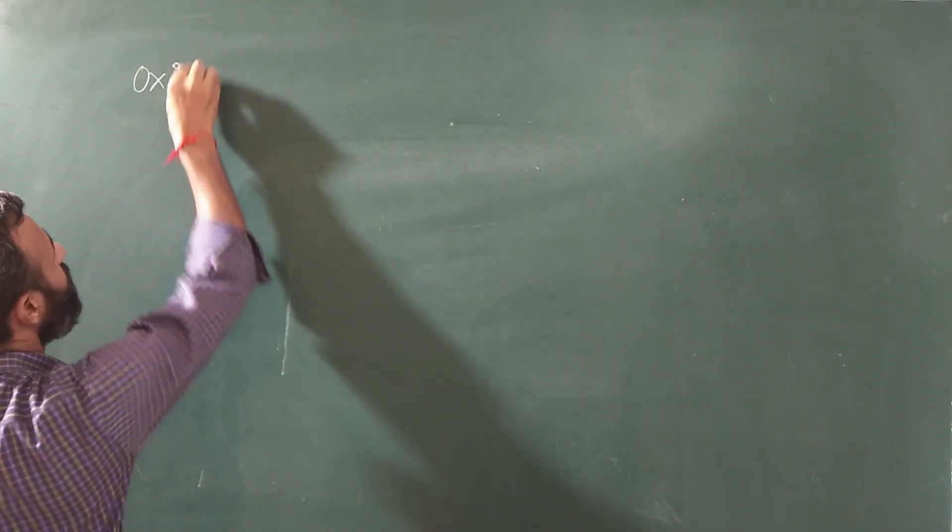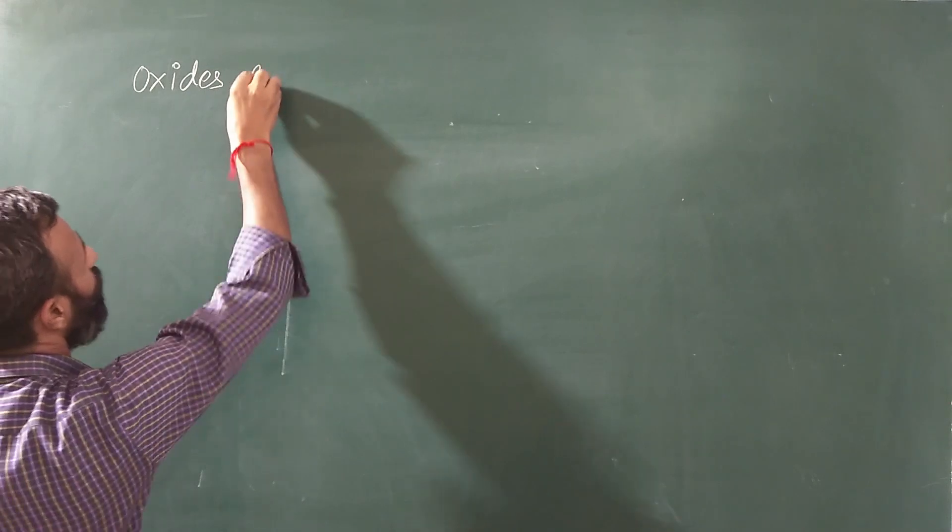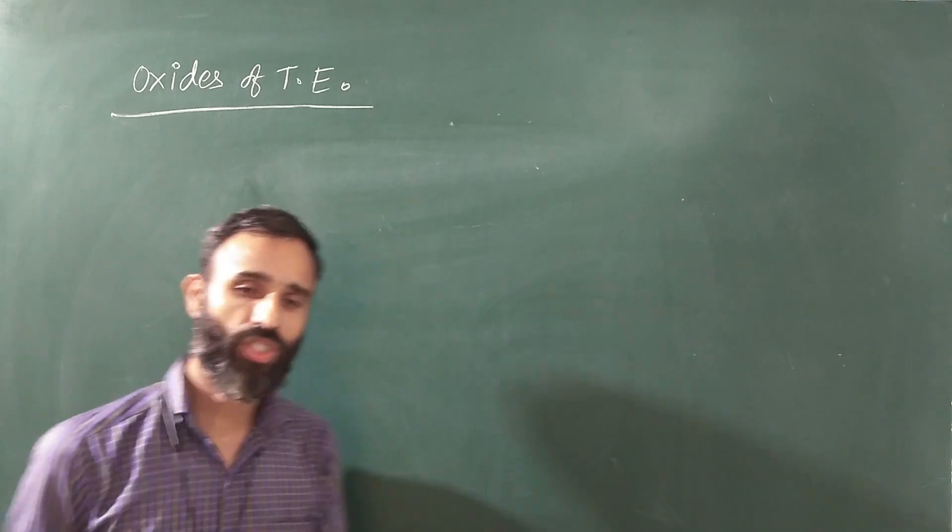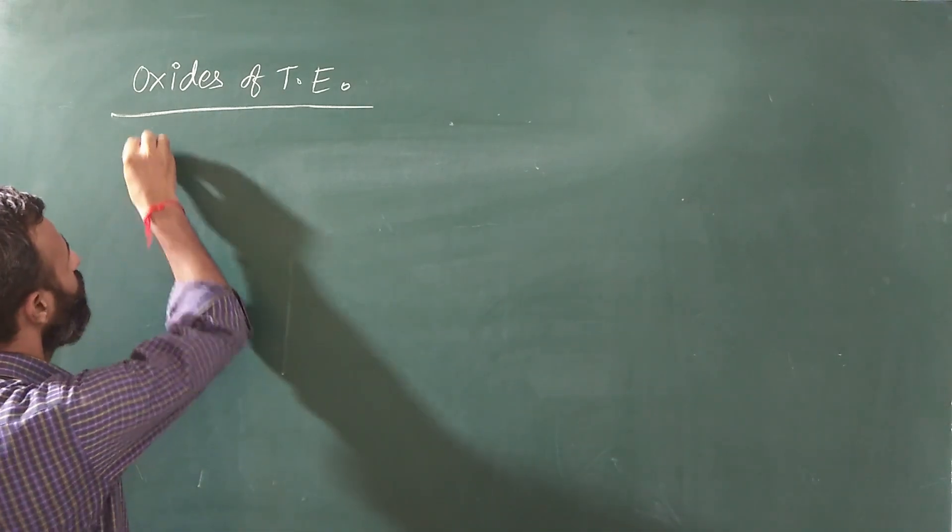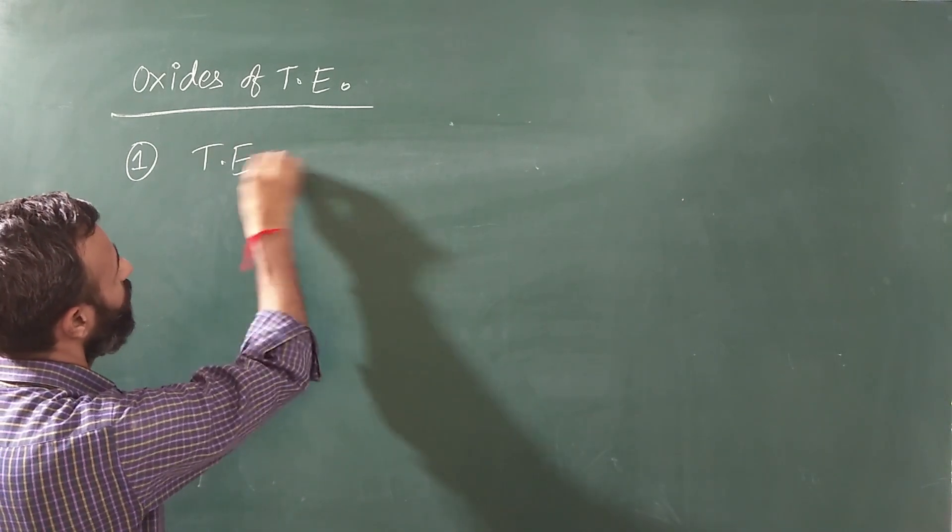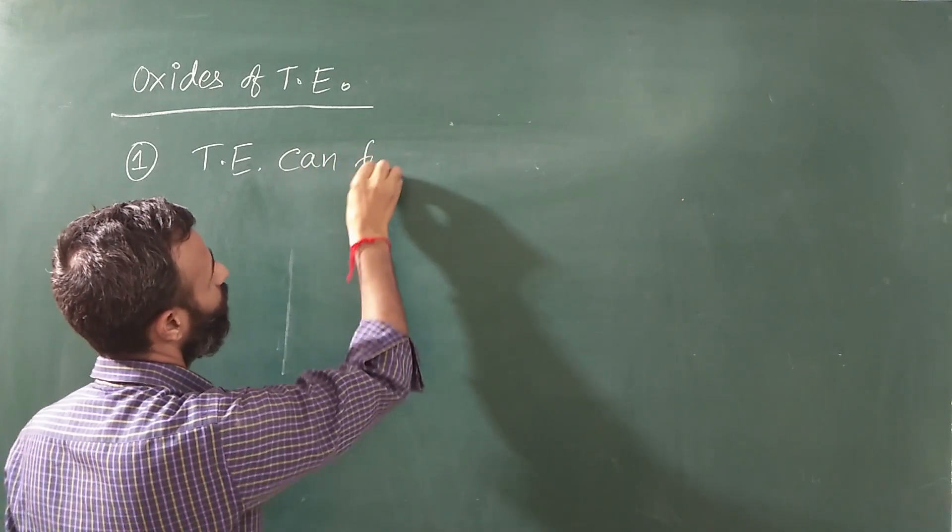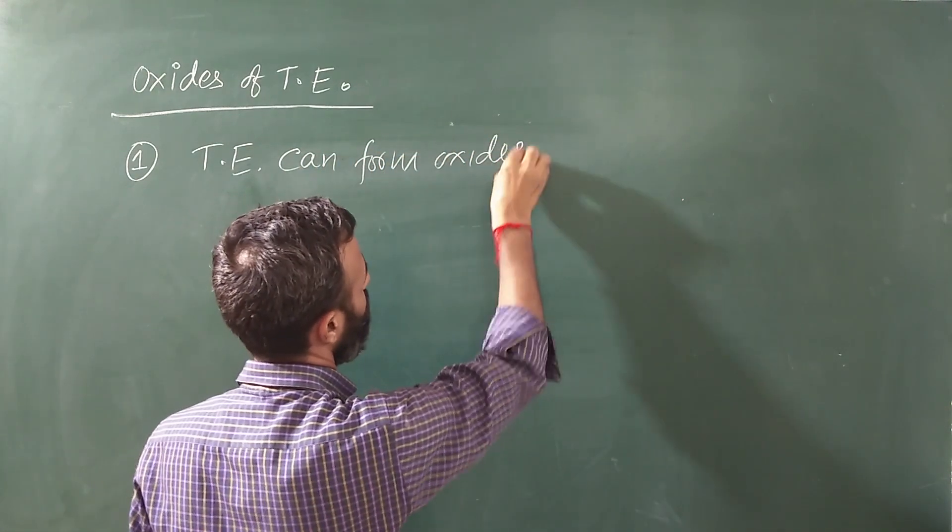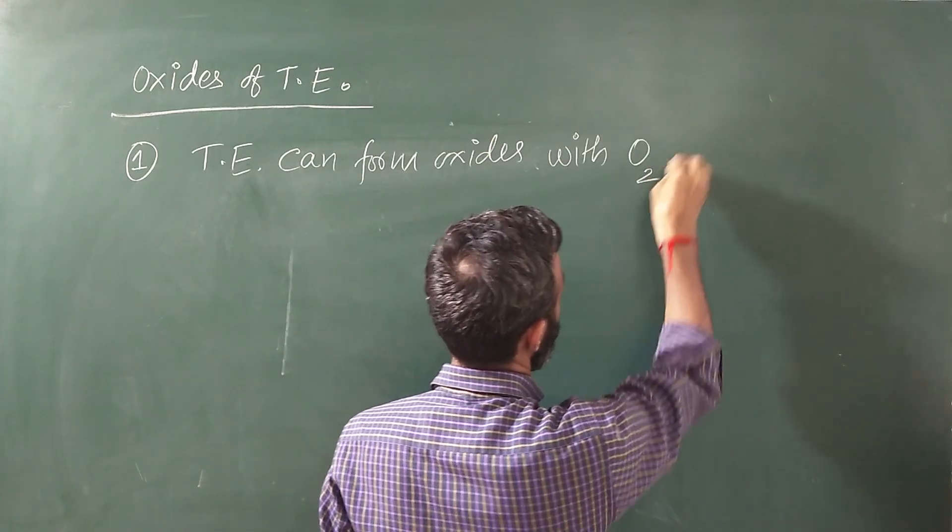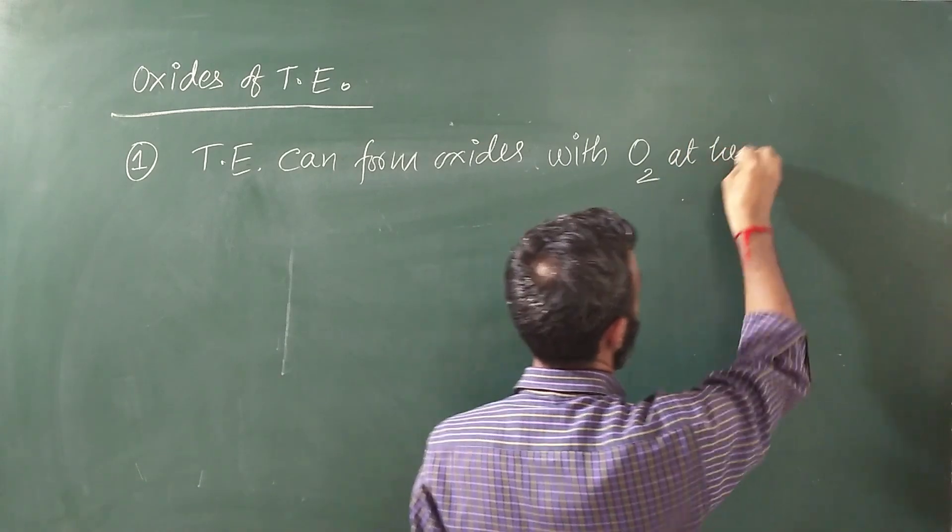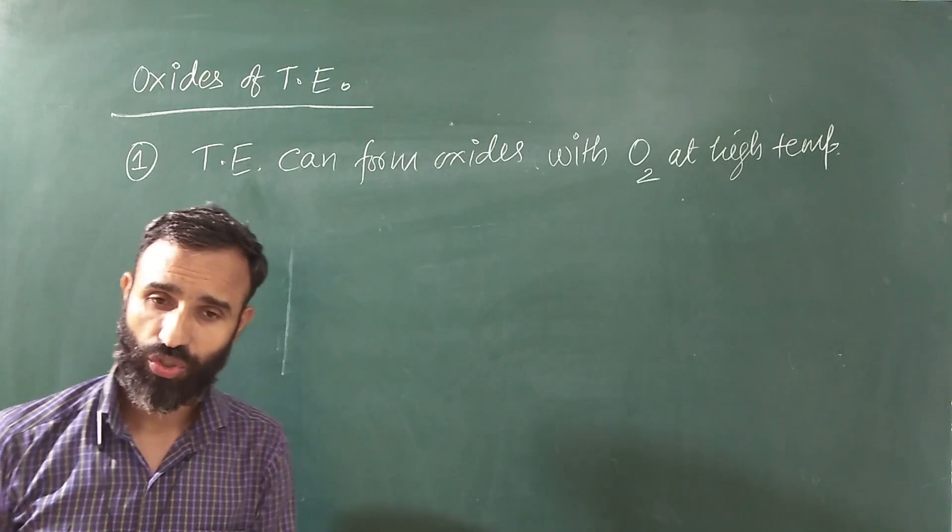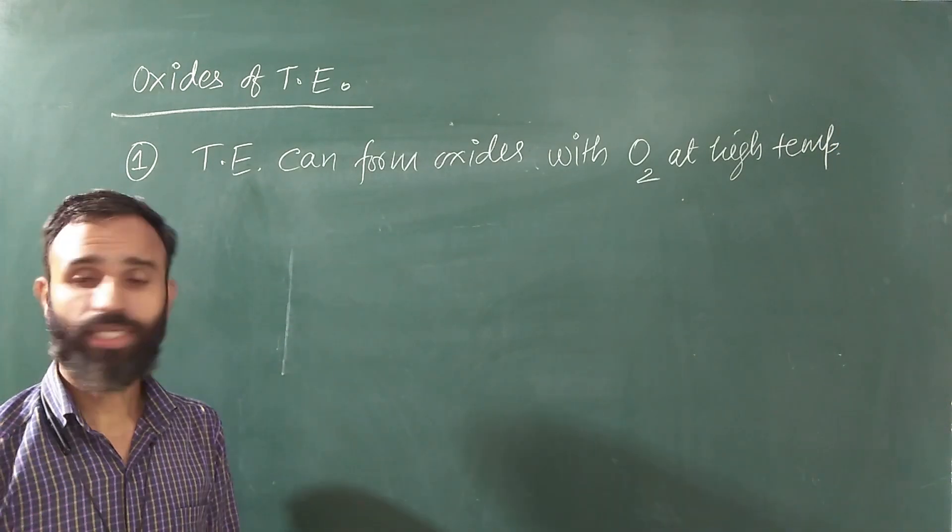Today's topic is oxides, oxides of transition elements. These oxides are formed by heating the metal with oxygen. Transition elements can form oxides with oxygen at high temperature. So when we heat transition elements with oxygen, we get oxides.